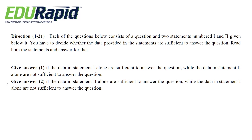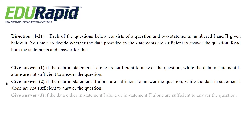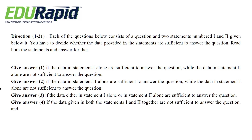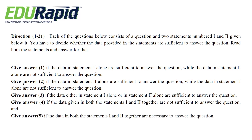Option 2: if the data in statement 2 alone are sufficient to answer the question, while the data in statement 1 alone are not sufficient. Option 3: if either statement 1 alone or statement 2 alone are sufficient to answer the question. Option 4: if the data given in both statements together are not sufficient. Last option: data in both statements 1 and 2 together are necessary to answer the question.